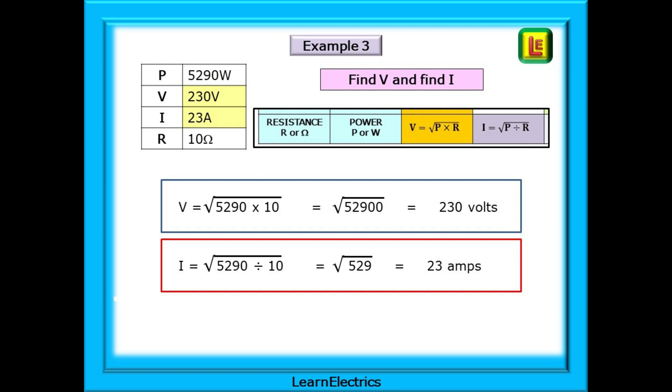Have a practice until you find the method that works for your calculator. The answer should be 230 volts. The same rules apply for finding the current, I. This time it's the square root of 529, which is 23 amps. It looks complicated. It isn't.